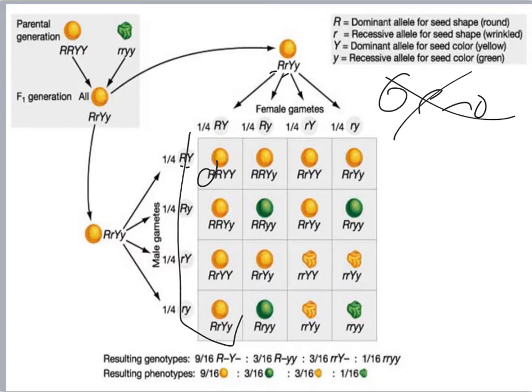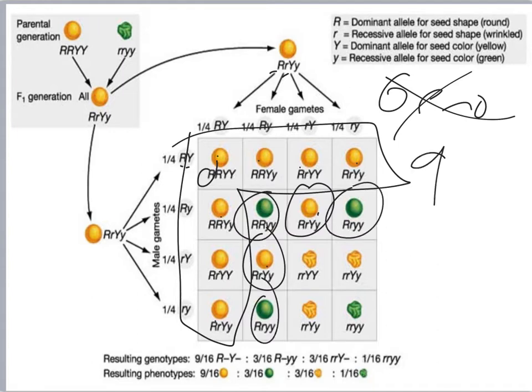And in this case, there are nine that are round and yellow. There are three that are round and green, three yellow and wrinkled, and one that is green and wrinkled.